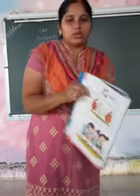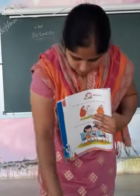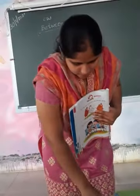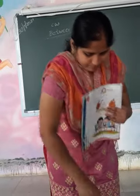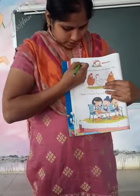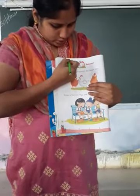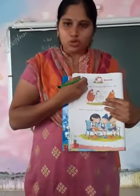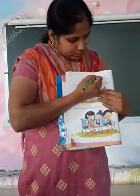Write CW in the middle of the page and today's date, that is 30th January 2021. And write CW.